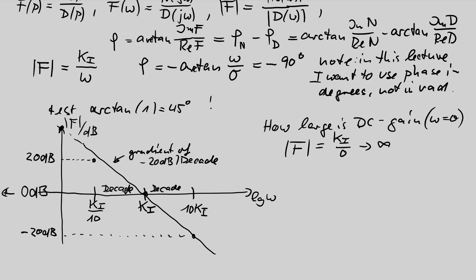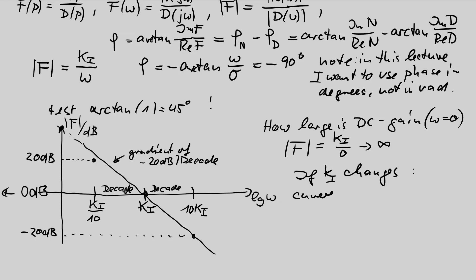What happens if k changes? If ki is doubled, this value is doubled — the curve is shifted. The gradient is unchanged because in the gradient ki is non-existent. The gradient for all integrators in the world is always minus 20 dB per decade, and ki defines the position. So the curve is shifted but the gradient is the same.